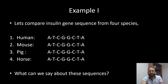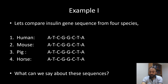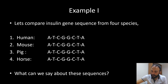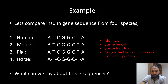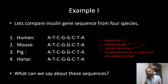Let's start with an example: comparing the insulin gene sequence from four different species — human, mouse, pig, and horse. If you see that all these sites have the same protein or nucleotide, this is just an example. All of them are the same — identical — and they have the same length. If they are identical and the same length, they have the same function and also originated from a common ancestor, because they came from some ancestral species and are evolutionarily related.